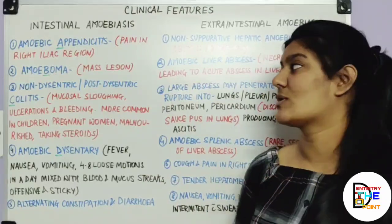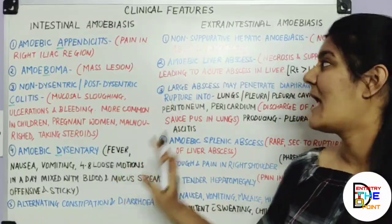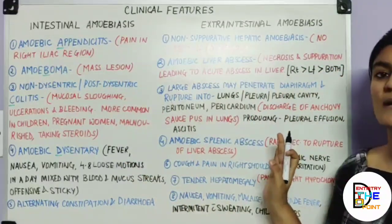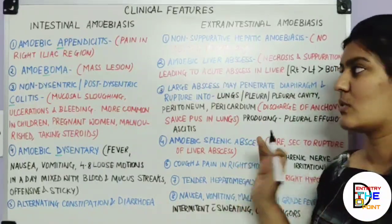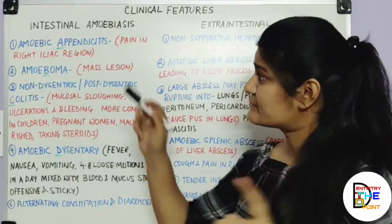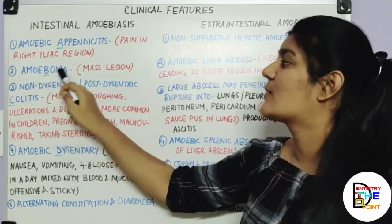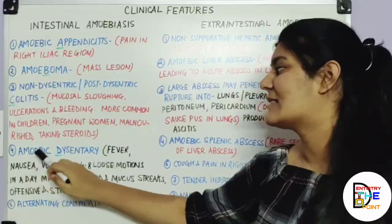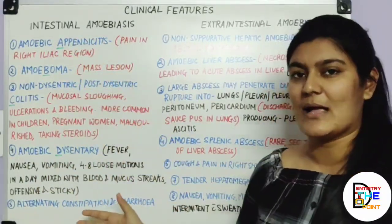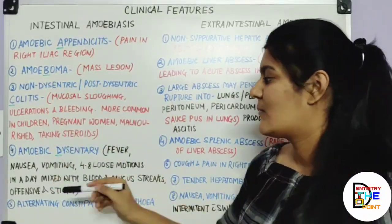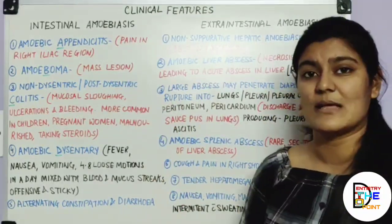For intestinal amoebiasis, the trick to remember the clinical features is A, B, C, D: A for appendicitis, B for amoeboma, C for colitis, and D for amoebic dysentery. Starting with amoebic dysentery, which is the initial manifestation — it is infectious diarrhea with fever, nausea, vomiting, and 4 to 8 loose motions per day mixed with blood and mucus streaks, offensive and sticky.